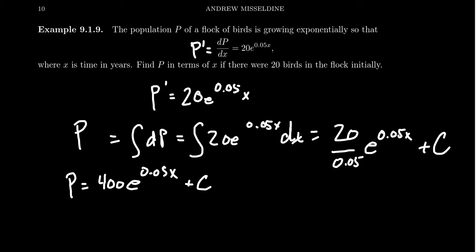This gives us the general solution to this differential equation. We want to find a particular solution and we do that with the initial value given. When they say there are 20 birds initially, they're saying that P(0) = 20, where initially means at the start, x = 0.